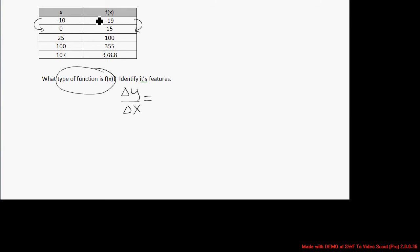If I travel from the first point in the table to the second point, the change in y would be 15 minus negative 19 over 0 minus negative 10. 15 minus negative 19 is 34. 0 minus negative 10 is 10. And so you see a change in y over change in x of 3.4.